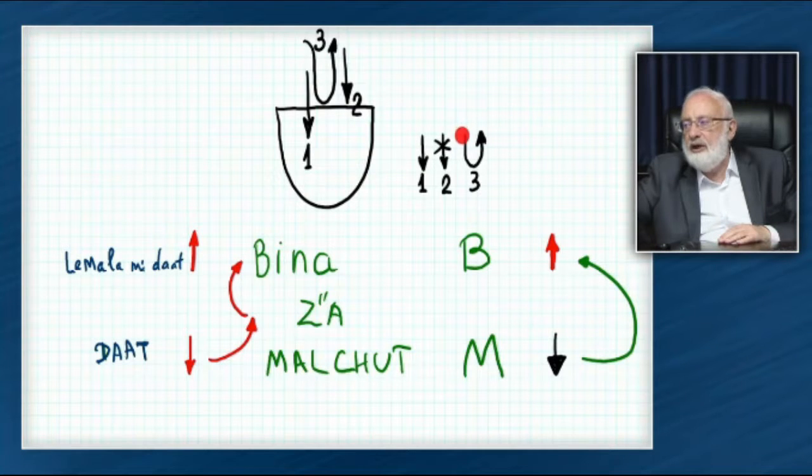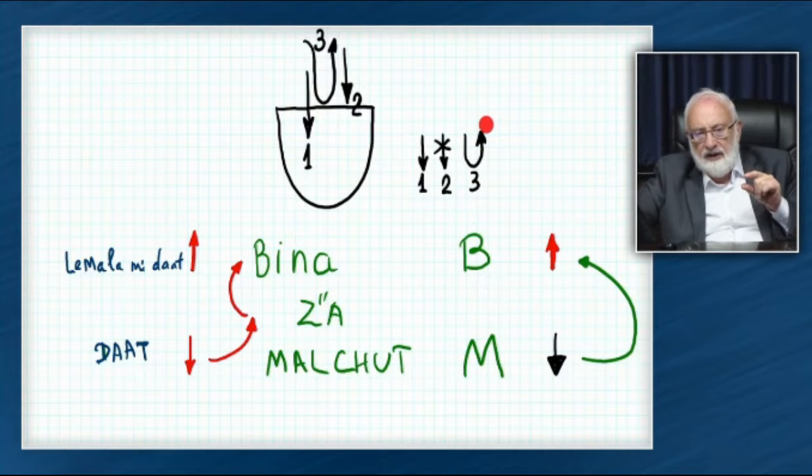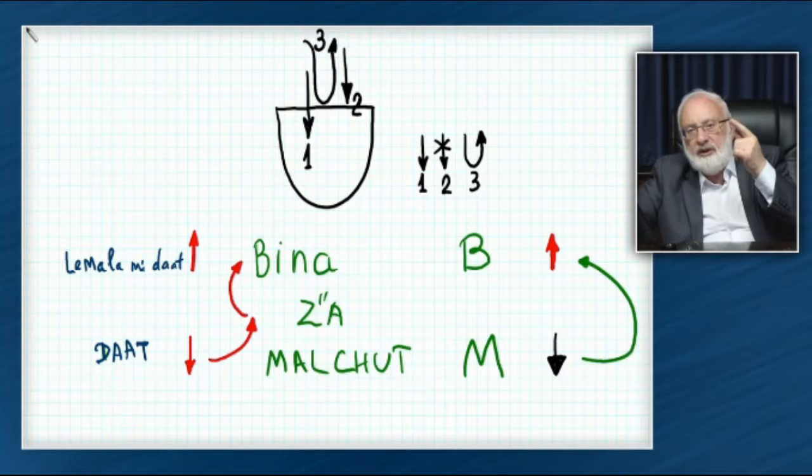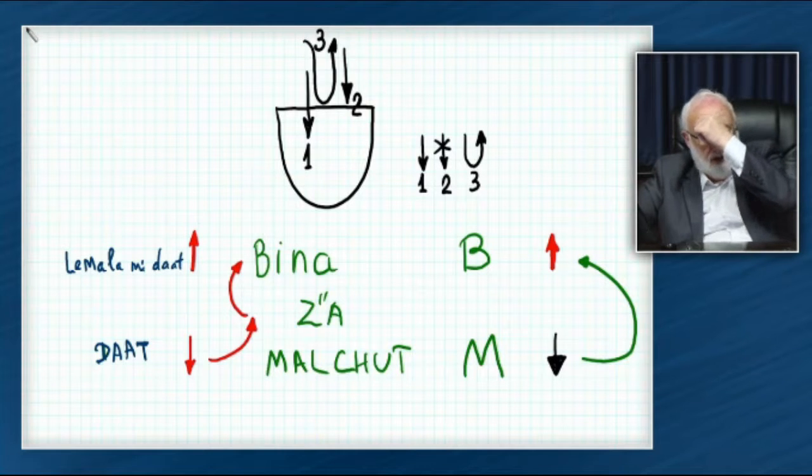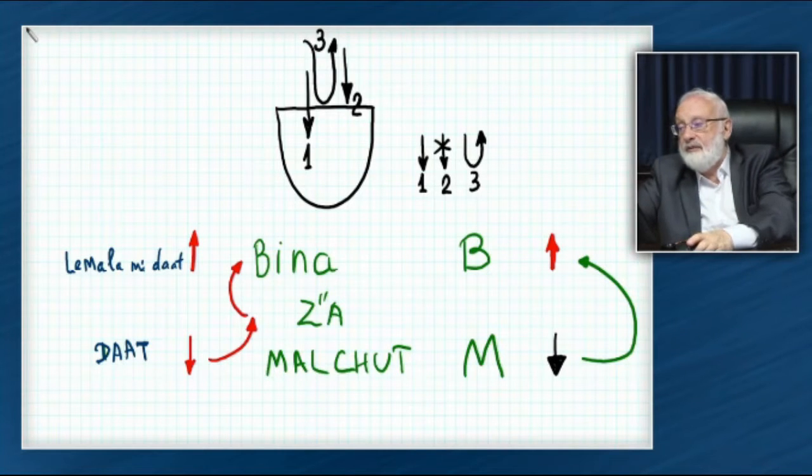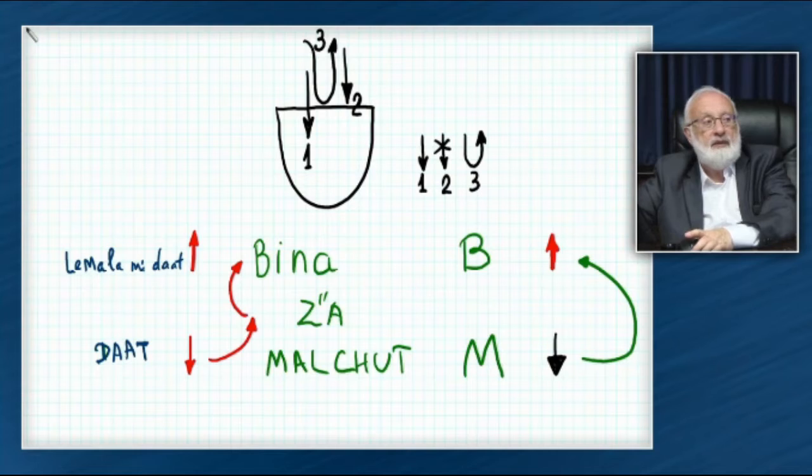And then, after I make the tzimtzum, I can use my will to receive in order to bestow. To receive only, enjoy only to the measure to which I can delight the creator by doing so.